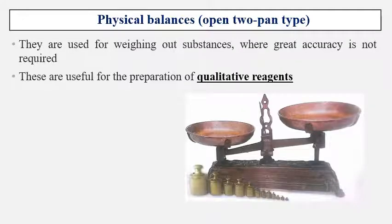The physical balance is an open-type balance previously used in many shops, now replaced with electrical ones. Here you can see the old two-pan open-type physical balance. They are used for weighing substances where great accuracy is not required, like preparation of qualitative reagents. For qualitative reagents we don't need much accuracy for weighing.